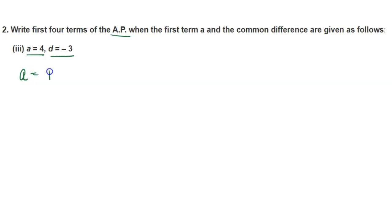So, the first term is 4. Then the second term: A₂ equals A plus the common difference, equals 4 plus D which is minus 3, equals 4 minus 3 equals 1.